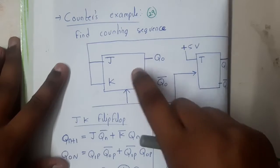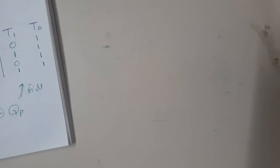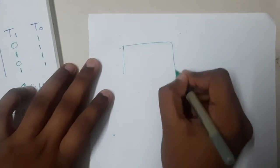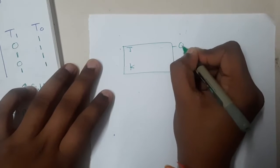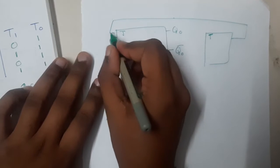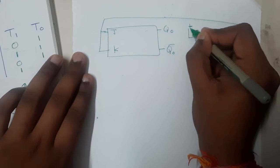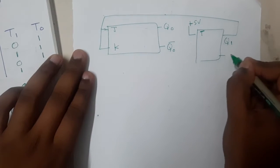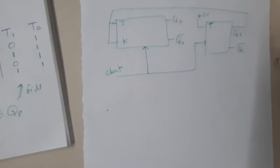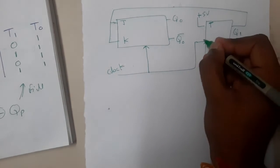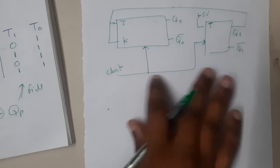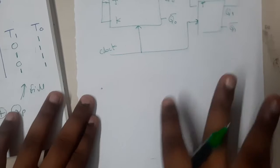Let us solve and find what is the counting sequence of this counter. This is a step-by-step process — the whole process will take a maximum of two minutes if you solve it properly. Let me draw the diagram first: Q0 bar as T input, and the same input is given to the other flip-flop as well. There is a positive 5 volts input, Q1 and Q1 bar, and a common clock for both. Remember: a common clock means synchronous, whereas different clocks means asynchronous.